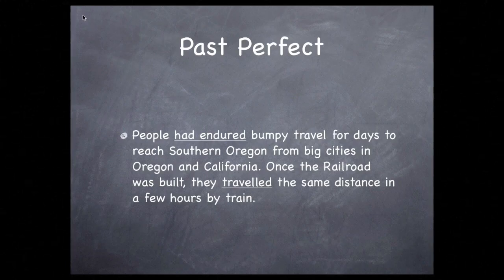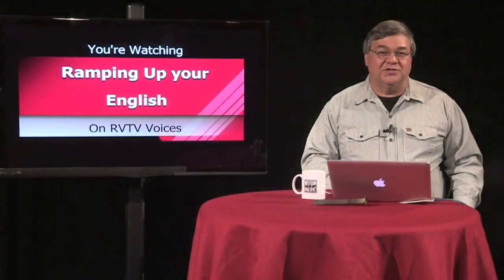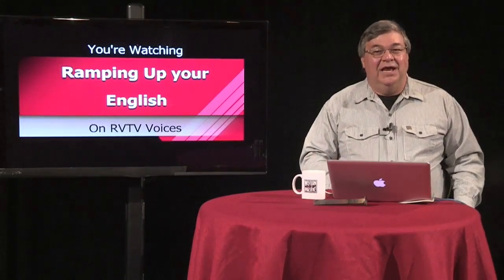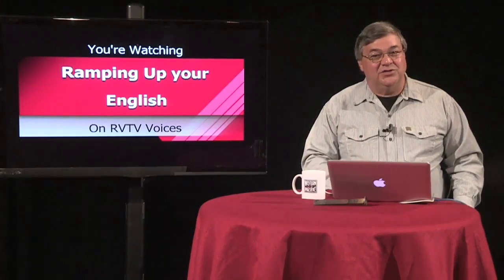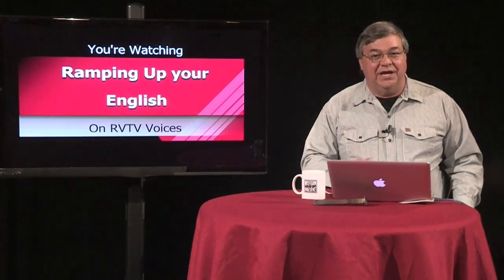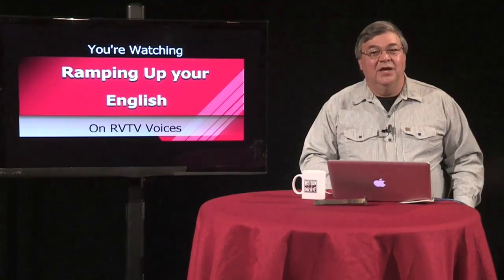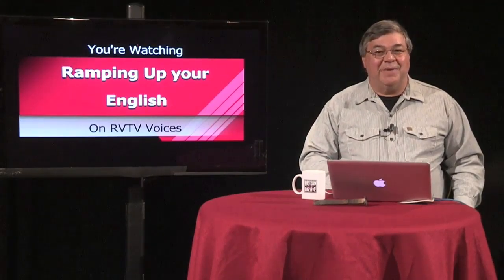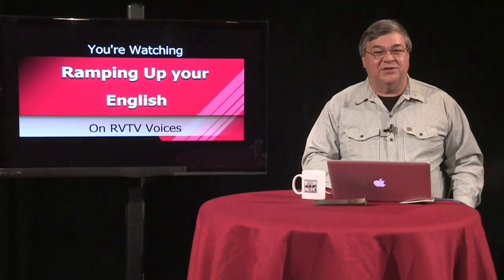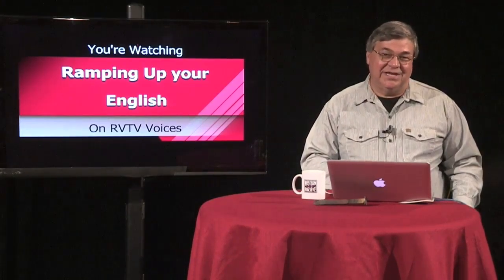Adding 'had' to the verb 'endured' makes it clear that this situation only existed before the building of the railroad in Southern Oregon. In the second sentence, the past tense verb 'traveled' puts this situation after the first one, yet still in the past. 'Had' functions here as a helping verb — no helping verb was needed in the second sentence. If this all seems confusing or just too hard to remember, don't worry. Now that it's in your awareness, you're more likely to notice it when you hear it or read it. And that's the value of watching the video clips and reading about a topic. Being able to use the verb in the past perfect form will help you communicate complex thoughts in a way that makes it clear what you're trying to say.